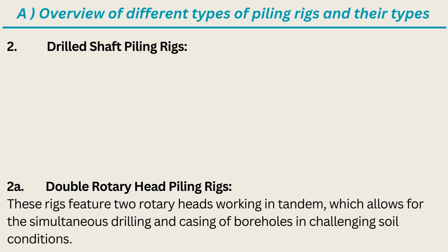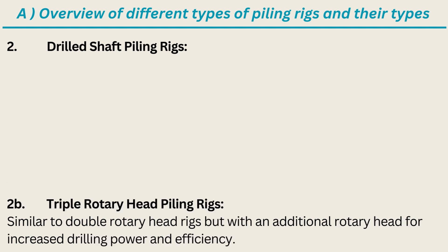Drilled Shaft Piling Rigs — Double Rotary Head Piling Rigs: these rigs feature two rotary heads working in tandem, which allows for the simultaneous drilling and casing of boreholes in challenging soil conditions.